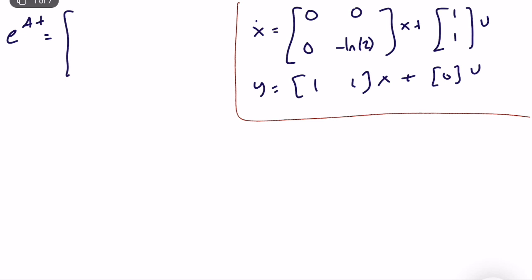Since you have a diagonal A, e to the power At is very easy. If you follow the lectures and technical definition of exponential matrix, you will see that for a diagonal matrix, if you take e to the power A of a diagonal matrix, it will also be diagonal. The off diagonal elements will be equal to zero and on the diagonal you simply put e to the power.